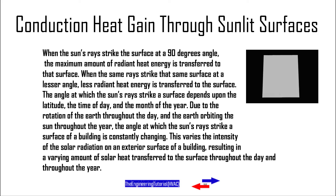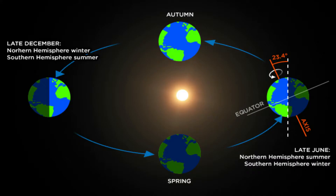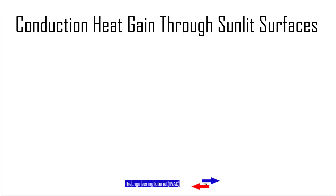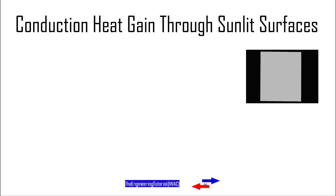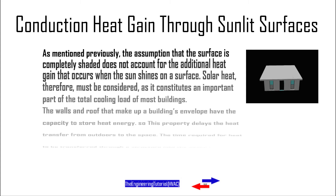The angle at which the sun's rays strike a surface depends upon the latitude, the time of day, and the month of the year. Due to the rotation of the earth throughout the day and the earth orbiting the sun throughout the year, the angle at which the sun's rays strike a surface of a building is constantly changing. This varies the intensity of solar radiation on an exterior surface, resulting in a varying amount of solar heat transferred to the surface throughout the day and throughout the year.